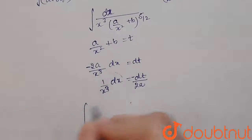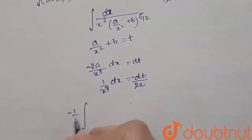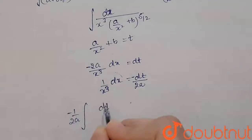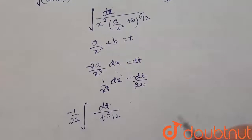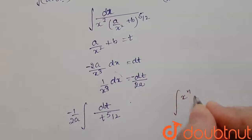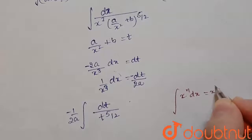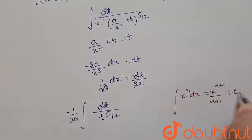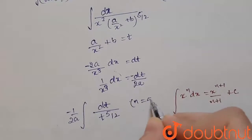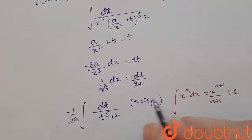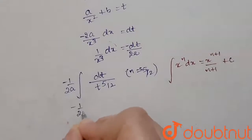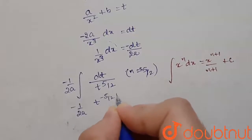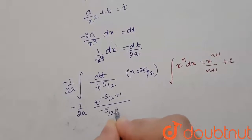Minus 1/2a is a constant and can be taken out of the integration. We now integrate dt/t^(5/2) using the formula: integral of x^n dx = x^(n+1)/(n+1) + c. Here n = minus 5/2, so the integration becomes minus 1/2a · t^(−5/2 + 1) divided by (−5/2 + 1) plus c.